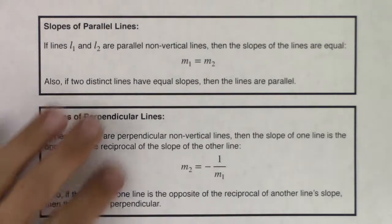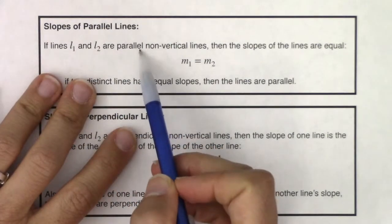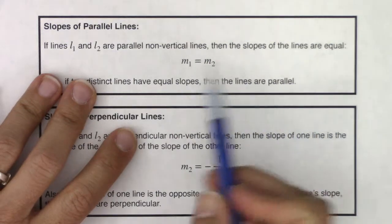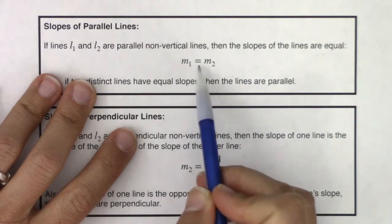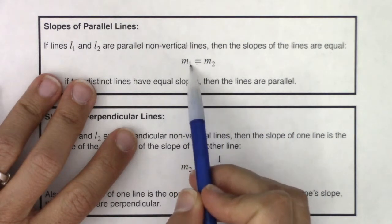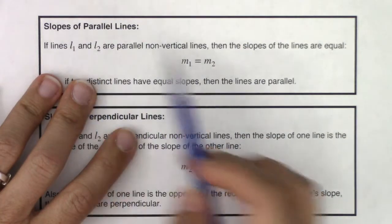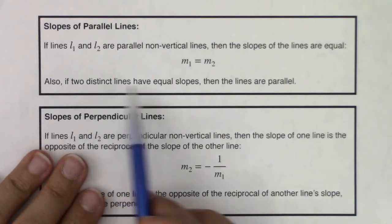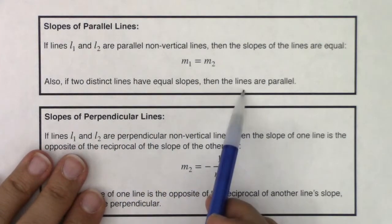So if two lines, L1 and L2, are parallel non-vertical lines, then the slopes of the lines are equal. So M sub 1 should be equal to M sub 2. M sub 1 would be the slope of the first line, M sub 2 would be the slope of the second line. And then on the flip of that, if two lines have equal slopes, then we know they're parallel.